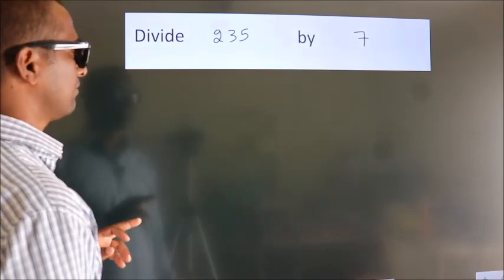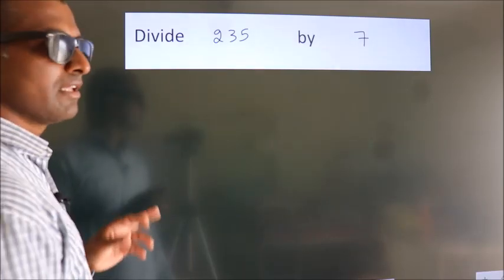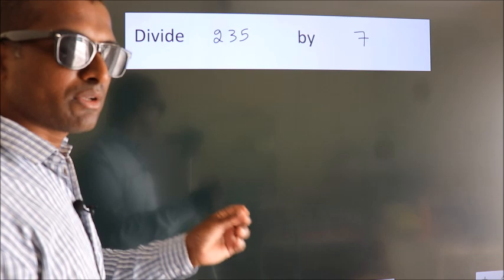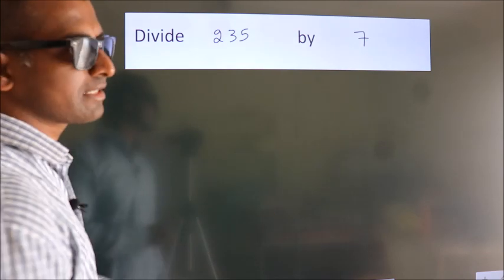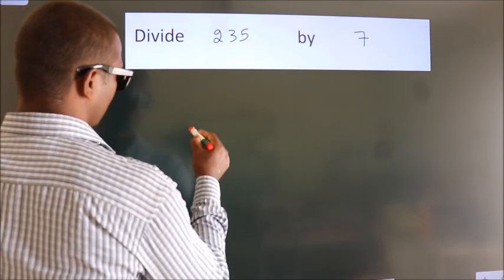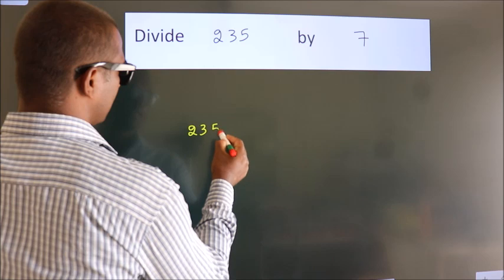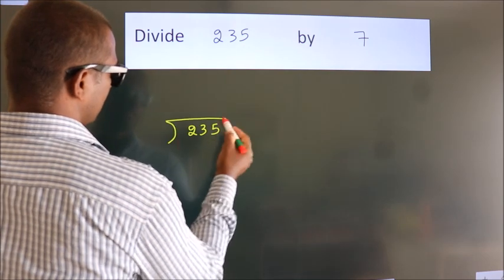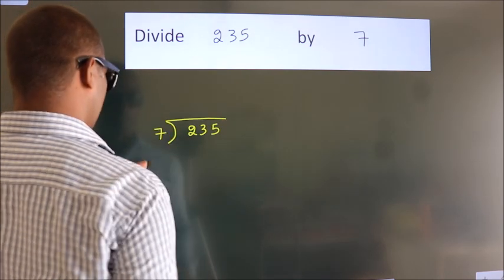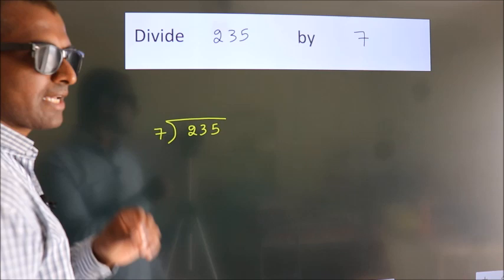Divide 235 by 7. To do this division, we should frame it in this way. 235 here, 7 here. This is your step 1.